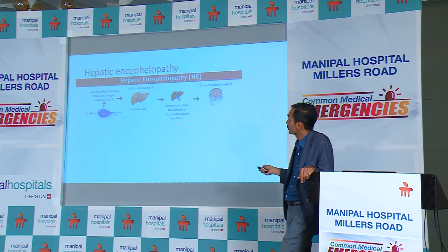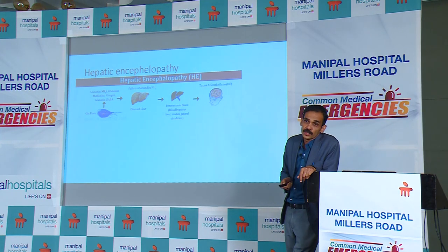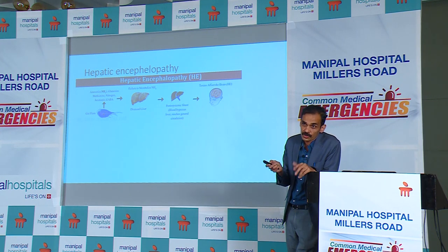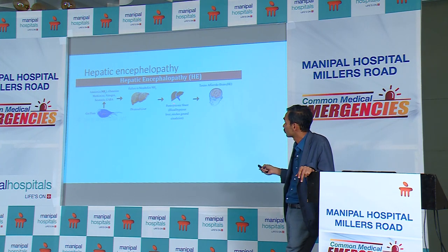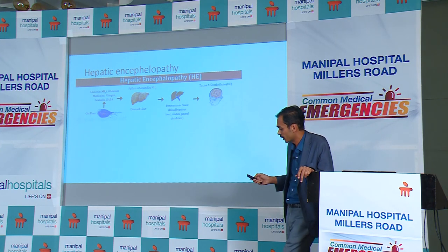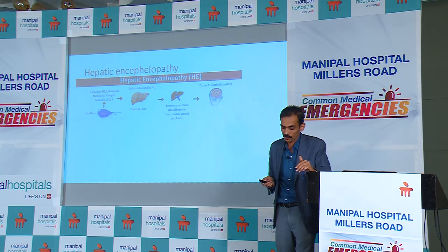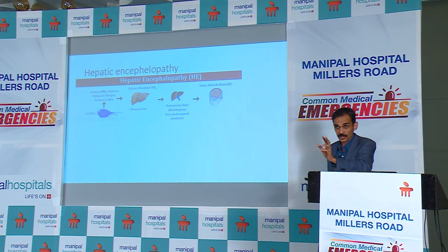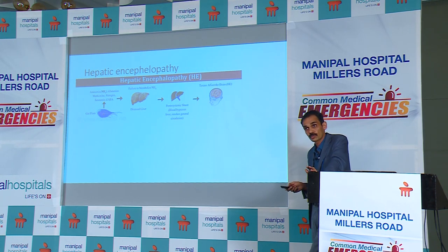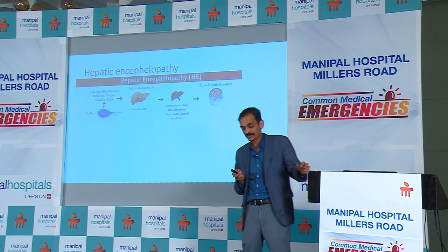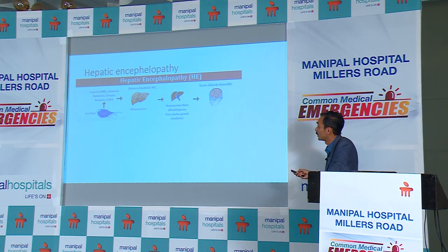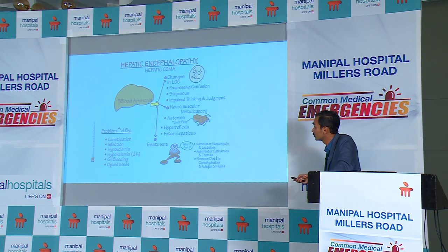The other emergency we commonly encounter is hepatic encephalopathy. Patients who have cirrhosis present with altered sensorium or drowsiness. This happens because of failure to metabolize ammonia by the liver - it bypasses through the portosystemic shunt and affects the brain, causing altered behavior. Most encephalopathy patients present with drowsiness, but we have seen rare scenarios where they present with Parkinson's-like symptoms or rarely with aggressive nature.